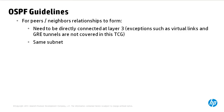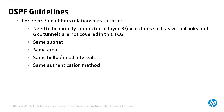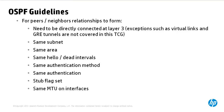For peer or neighbor relationships to form, the routers have to be in the same subnet using the same mask, configured in the same area, with hello and dead intervals configured the same, and the same authentication method — either no authentication, clear text, or MD5 — with the same authentication password. The stub flag needs to be set on both sides: if an area is configured as a stub or totally stubby area, all routers in that area need that configuration, otherwise relationships will not form. The same MTU and network type, such as broadcast or point-to-point, must also match. If peer relationships are not forming between an HP and Cisco switch, ensure the routers are directly connected and these configuration options are the same on both sides.